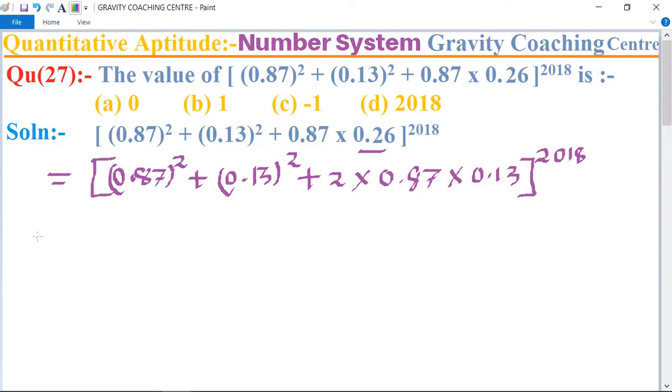Equal to: so this one is the form of a square plus b square plus 2ab, so we can write them 0.87 plus 0.13 whole square.